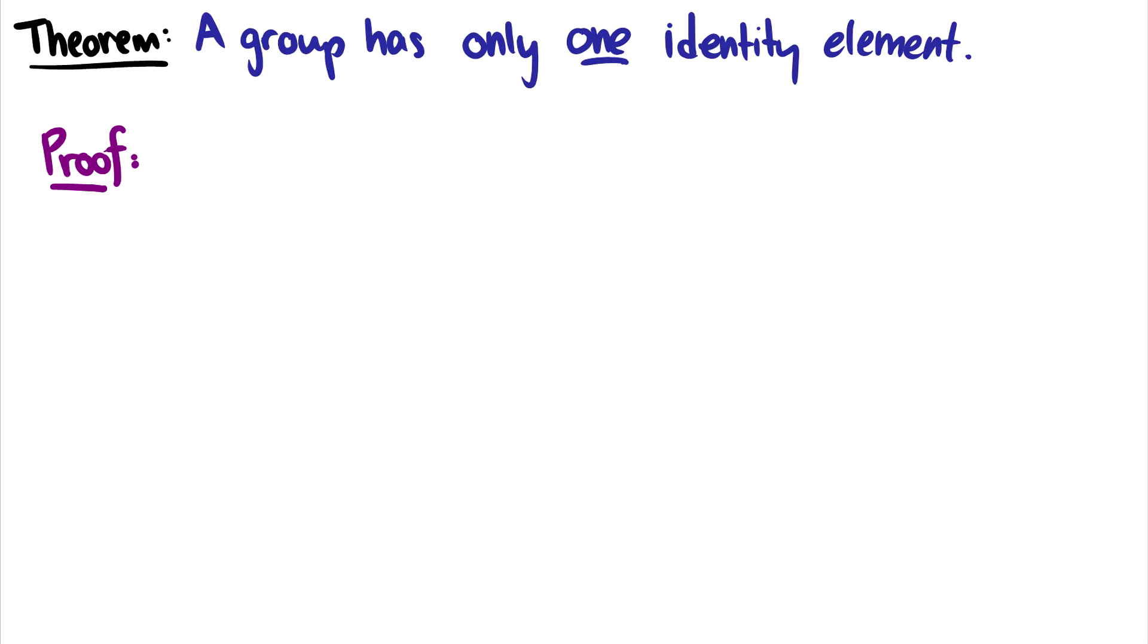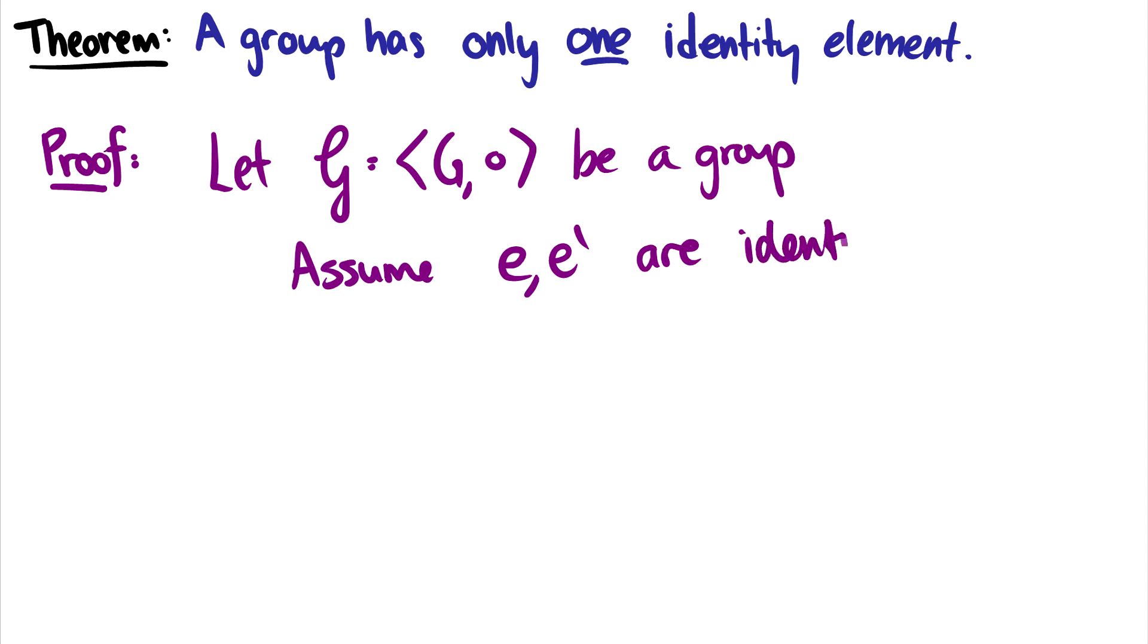So here is the proof. I'm just going to let G = ⟨G,○⟩ be a group because our assumption is we're working with groups here. Okay. And now what I'm going to do is I'm going to assume that we have some e and e′ are identity elements. And the important thing here is that e ≠ e′. So they're not the same identity elements. I'm going to assume this. And I'm going to show that if we assume this, we get some terrible contradiction.